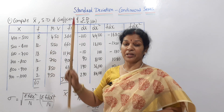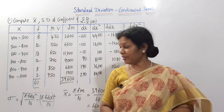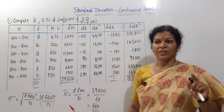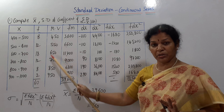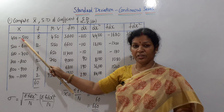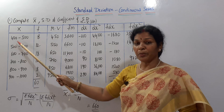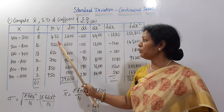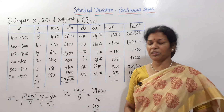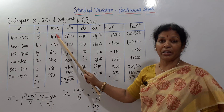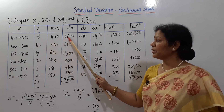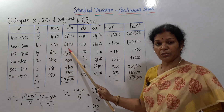The x-bar formula is sigma f m by n. M is the mid value. Mid value of 400 to 500 is (400 + 500)/2 = 450. Mid value of 500 to 600 is (500 + 600)/2 = 550. We then calculate frequency into mid value. F into M: 8 × 450 = 3,600 and 12 × 550 = 6,600.